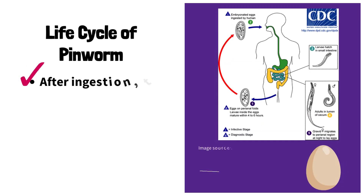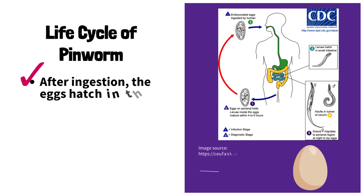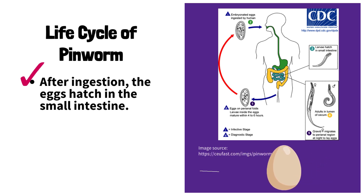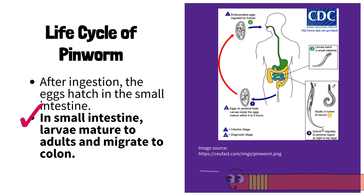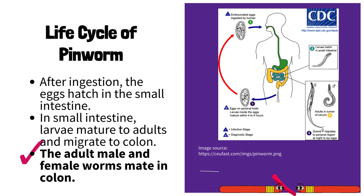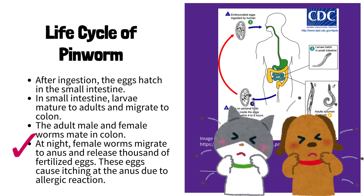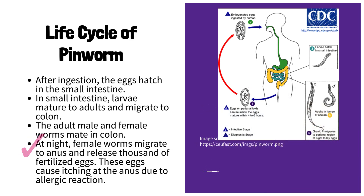After ingestion, the eggs hatch in the small intestine. In the small intestine, larvae mature to adults and migrate to the colon. The adult male and female worms mate in the colon. At night, female worms migrate to the anus and release thousands of fertilized eggs. These eggs cause itching at the anus due to an allergic reaction.